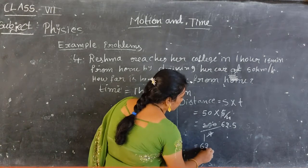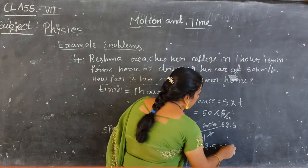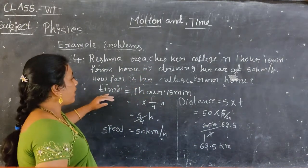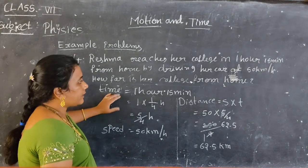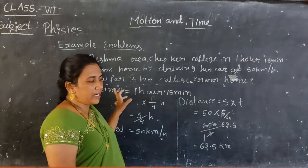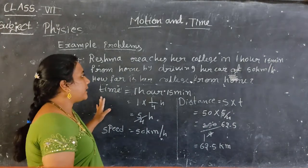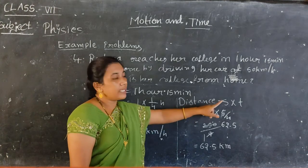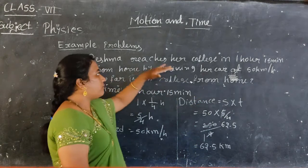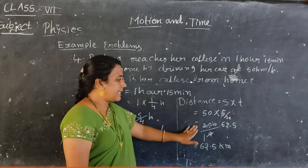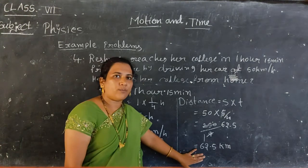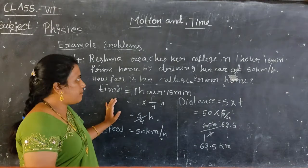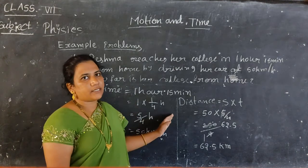We will get the answer 62.5 kilometers. Here, what formula we have: we need to calculate the distance. Formula of speed is equal to distance by time, but here we want to calculate distance, so we rewrite it as distance is equal to speed into time. With the given values we get the answer as 62.5 kilometers. These are some problems related to speed, distance, and time.